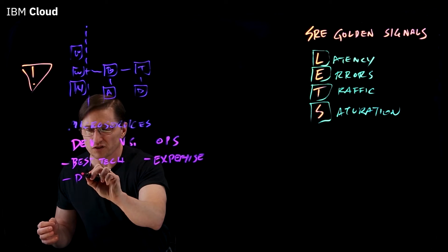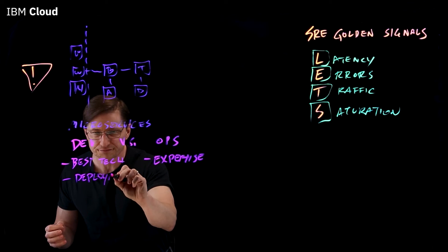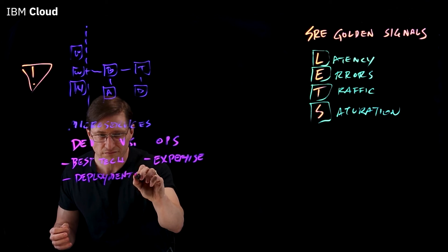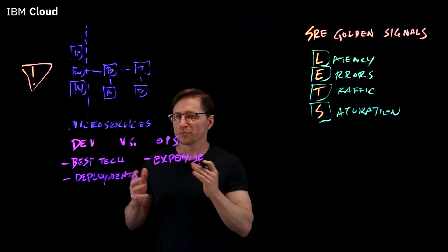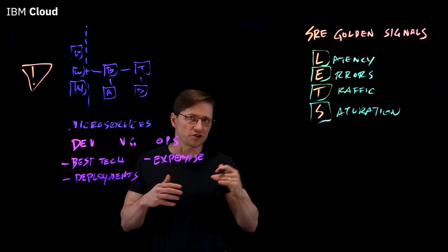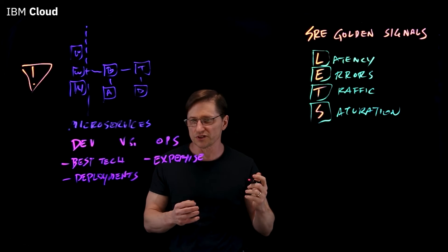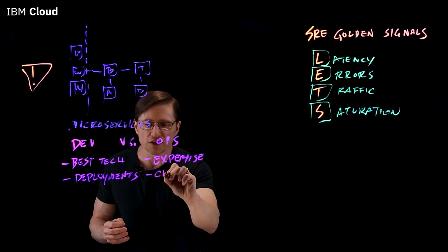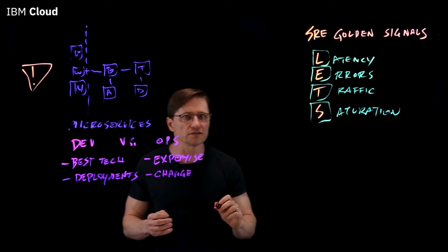The dev team likes that you can have microservices with more frequent deployments. That means that they can deploy on a schedule that is convenient for their development schedule versus a production schedule. But that means potentially more change the ops team has to be aware of.